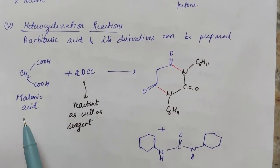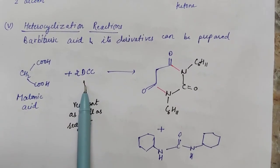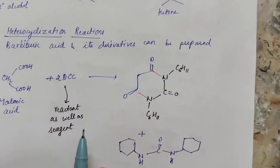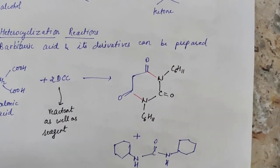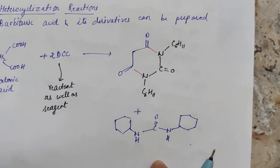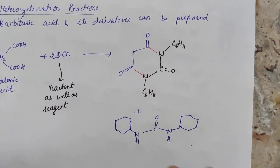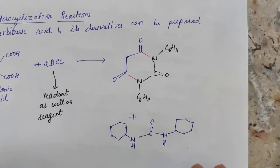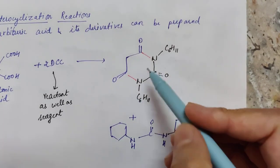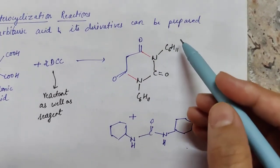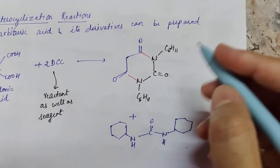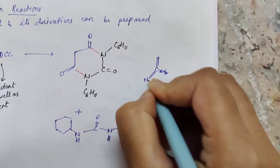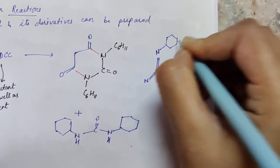In this reaction, malonic acid and two molecules of DCC react to form barbituric acid and dicyclohexylurea. One molecule of DCC is converted (reduced) to dicyclohexylurea, and the other takes part in forming the heterocyclic product. Looking at the DCC structure, we have nitrogens and C6H11 rings.